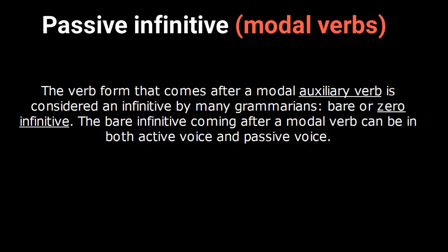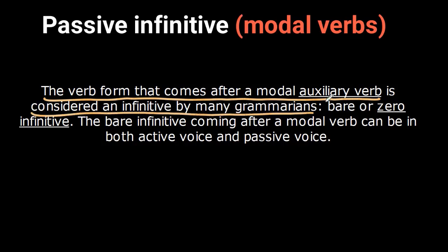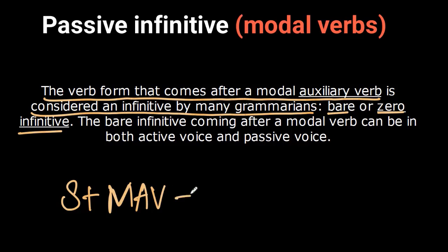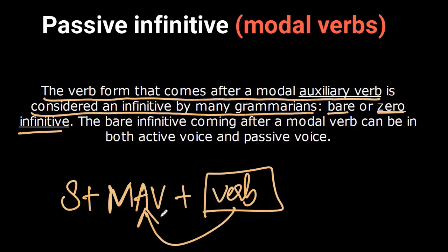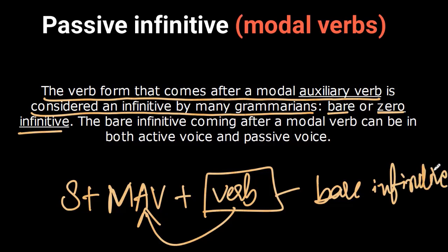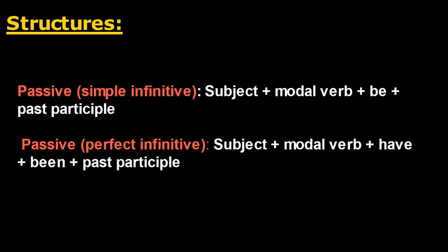There is another type: the bare passive infinitive. These infinitives come after a modal auxiliary verb. The verb form that comes after a modal is called a bare infinitive or zero infinitive — it's like a regular infinitive but without the particle 'to.' When a bare infinitive is in the passive voice, we call it a bare passive infinitive or zero passive infinitive.